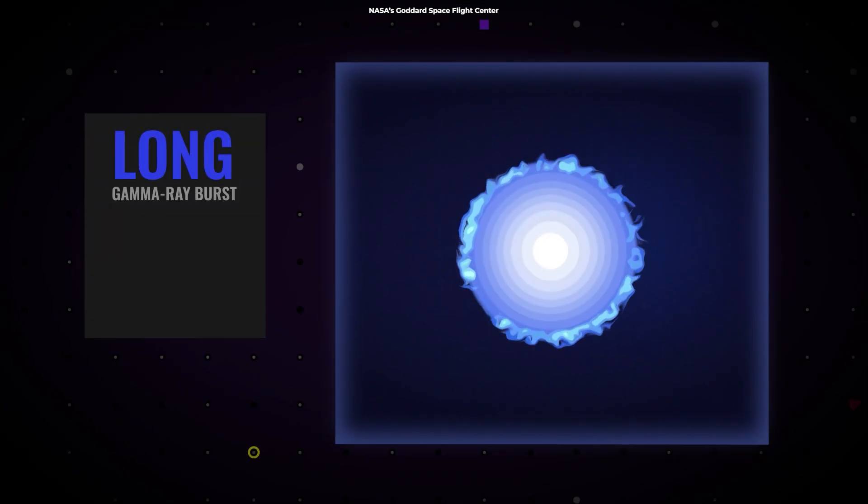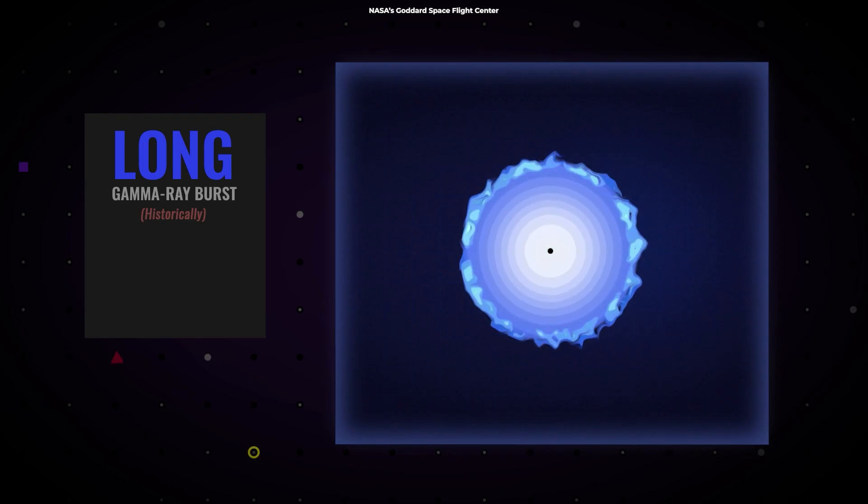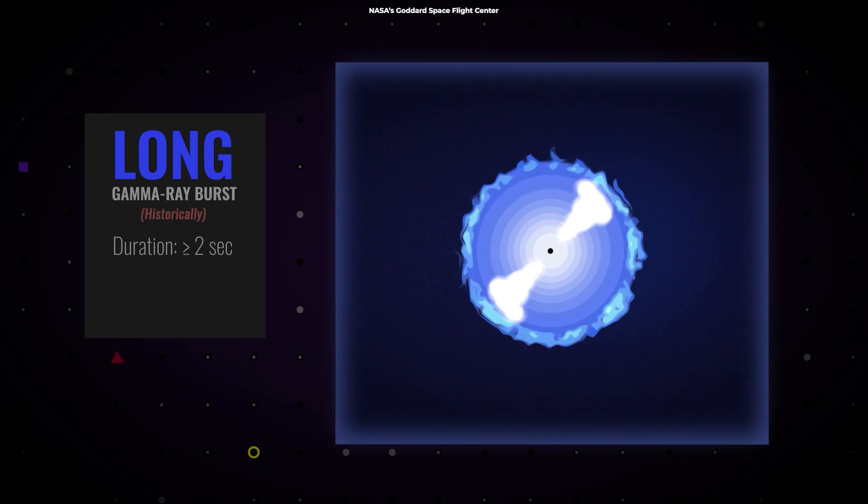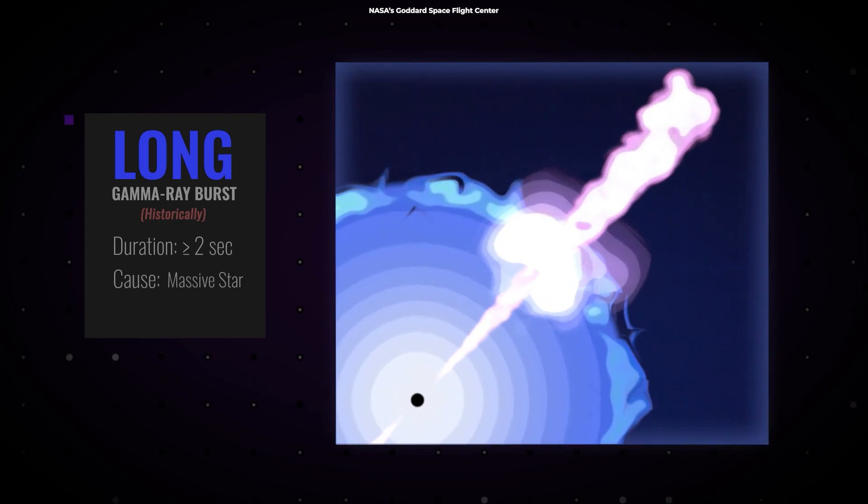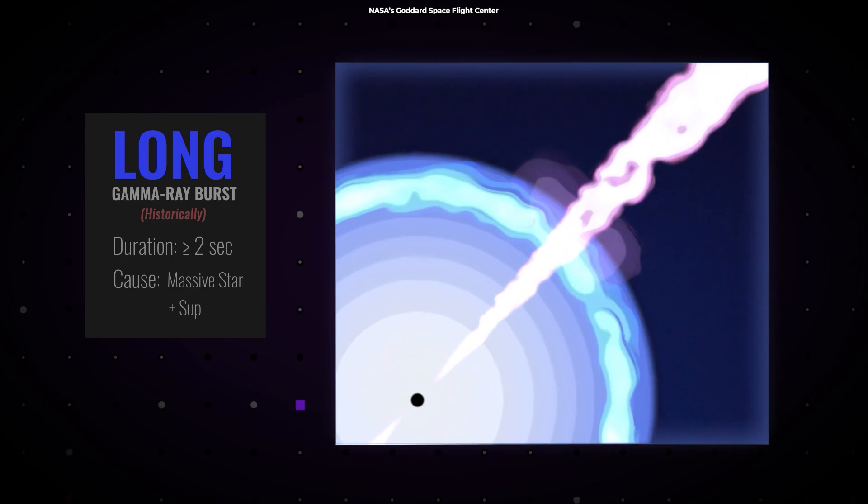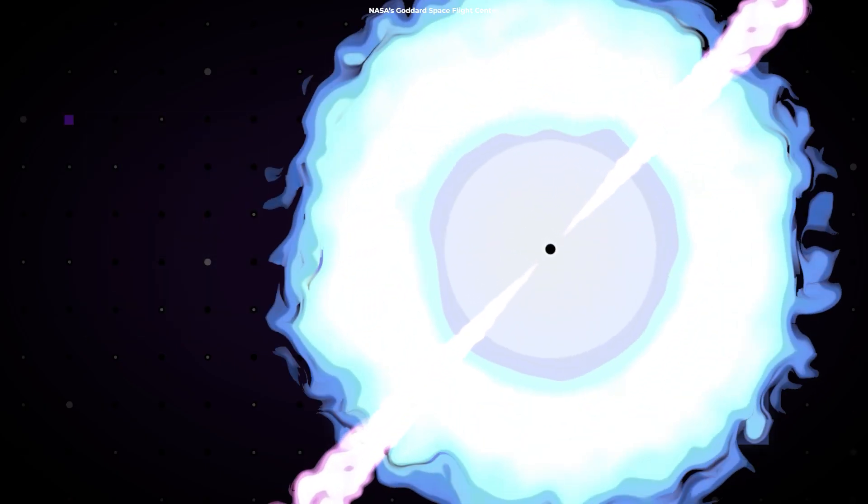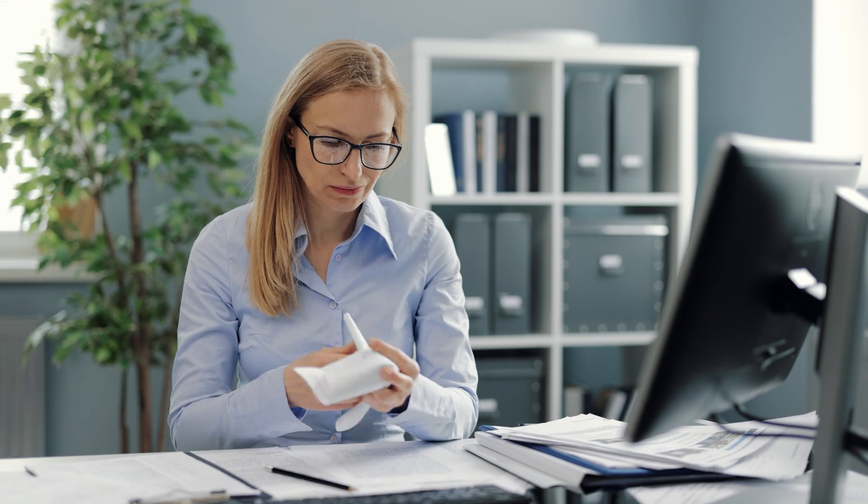Long GRBs last more than two seconds, and are the universe's way of saying lights out to massive stars. When a star that's at least 20-30 times the mass of our sun reaches its final days, its core collapses under gravity, forming a neutron star or a black hole. Talk about a retirement plan gone wrong!